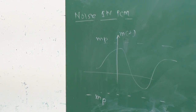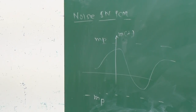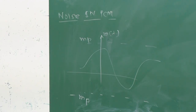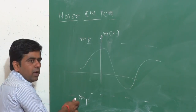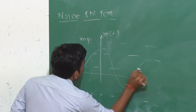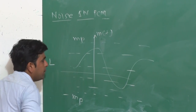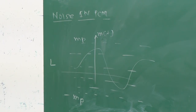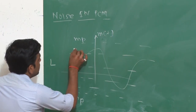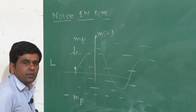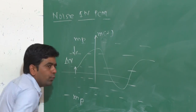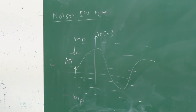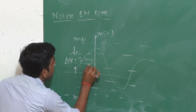This is the first step. We are having the signal m(t), which is a continuous signal. We have to decide its upper limit and lower limit. Upper limit is plus m_p, lower limit is minus m_p. Over this, we have to divide with capital L levels. The step size is given as delta_v, which is equal to 2·m_p divided by L.